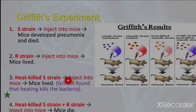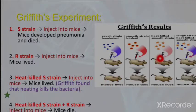The fourth step was that Griffith used heat-killed S strain bacteria as well as live R strain bacteria and injected them together into the mice. The result was that the mice died. This was a very surprising result for Griffith, because we know that heat-killed S strain is non-harmful and R strain is also non-harmful — so how could the mice develop pneumonia and die?